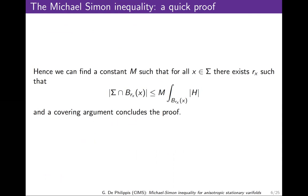This is basically the only proof of the Michael-Simon inequality that is around, and it really relies on the monotonicity formula.